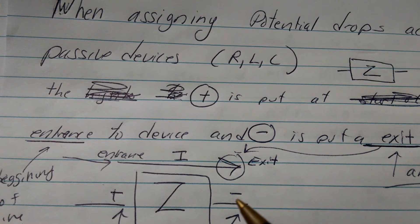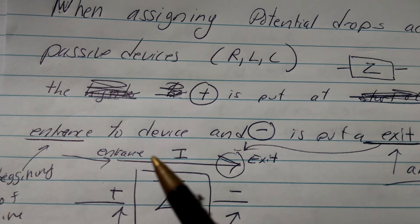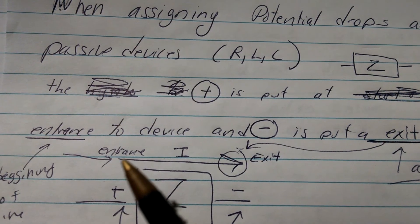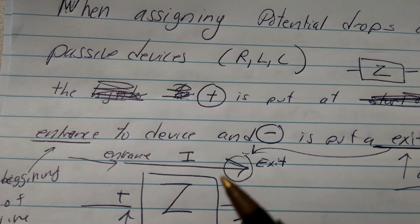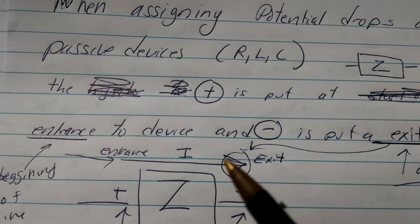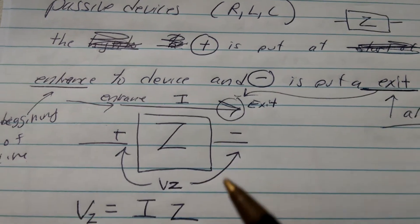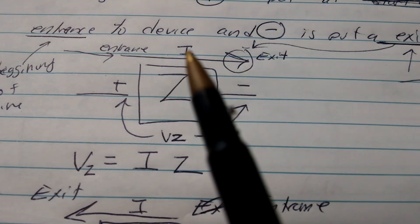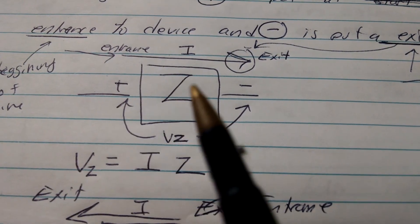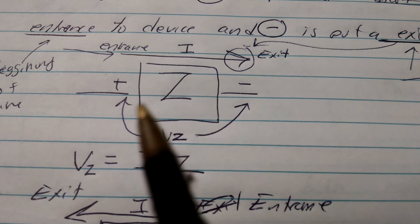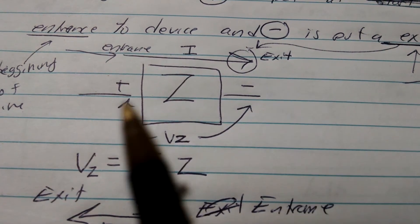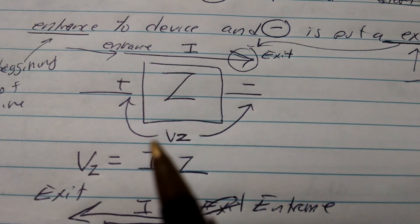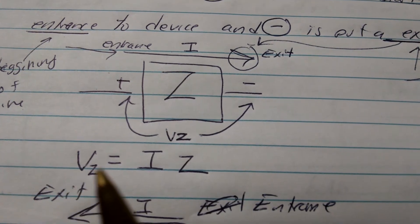How do you tell the difference between the entrance and the exit? The entrance is where the current enters in — it's the beginning of the line — and the exit is where the arrow is. So in this case, the current I flowing through this impedance goes in this direction: that's the entrance, that's the exit, higher potential, lower potential. VZ is measured that way, and we have Ohm's Law.